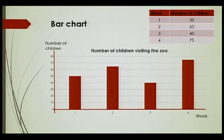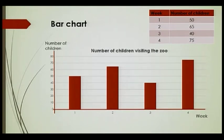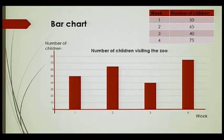On the x-axis, I am going to have the different weeks: one, two, three, four. On the y-axis, we are going to have the number of children. I need also to include a title. The title here is 'Number of Children Visiting the Zoo.' You can make use of graph paper or your copybook, but remember, I should be leaving equal spaces between the rectangles and all the rectangles should be of equal width.